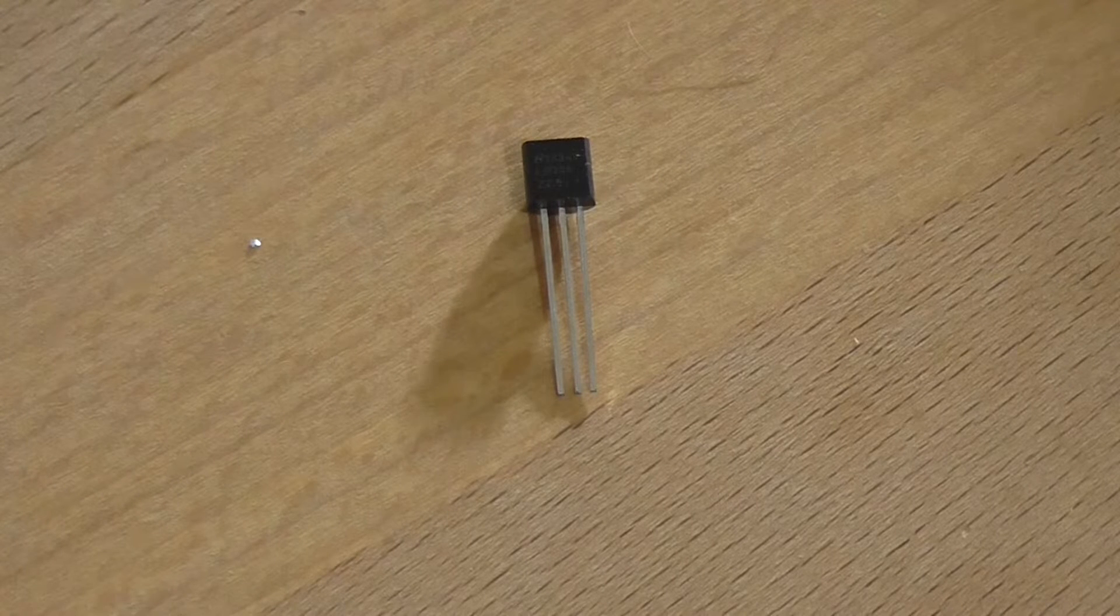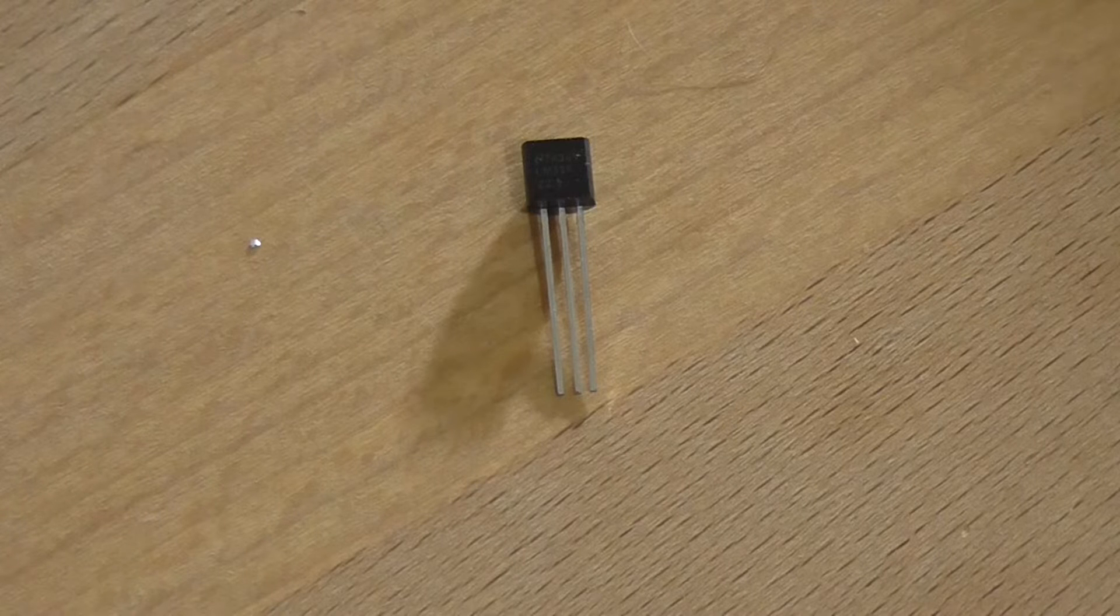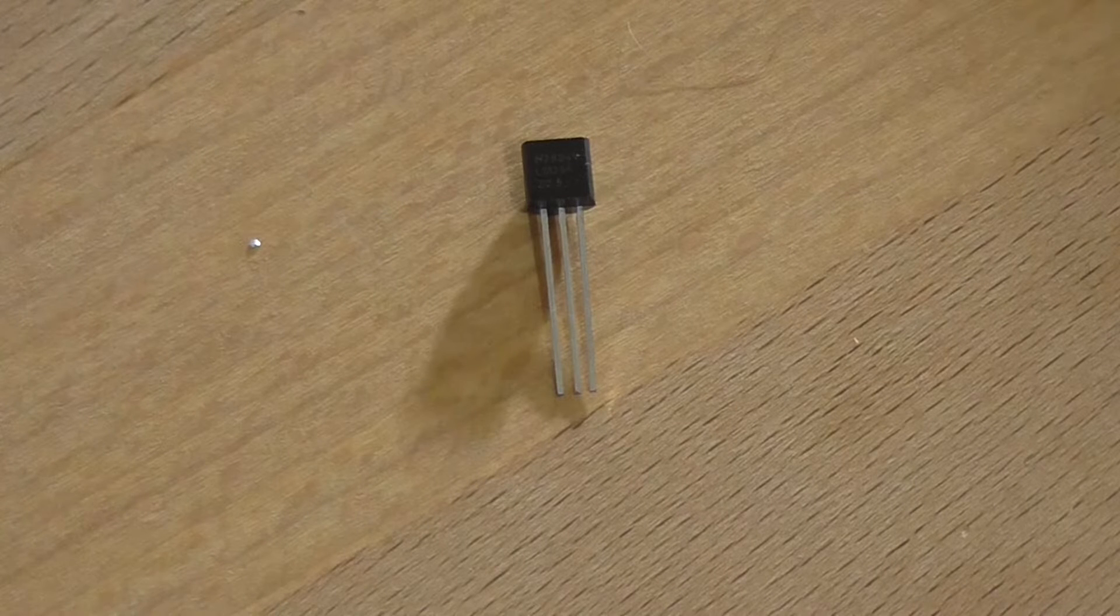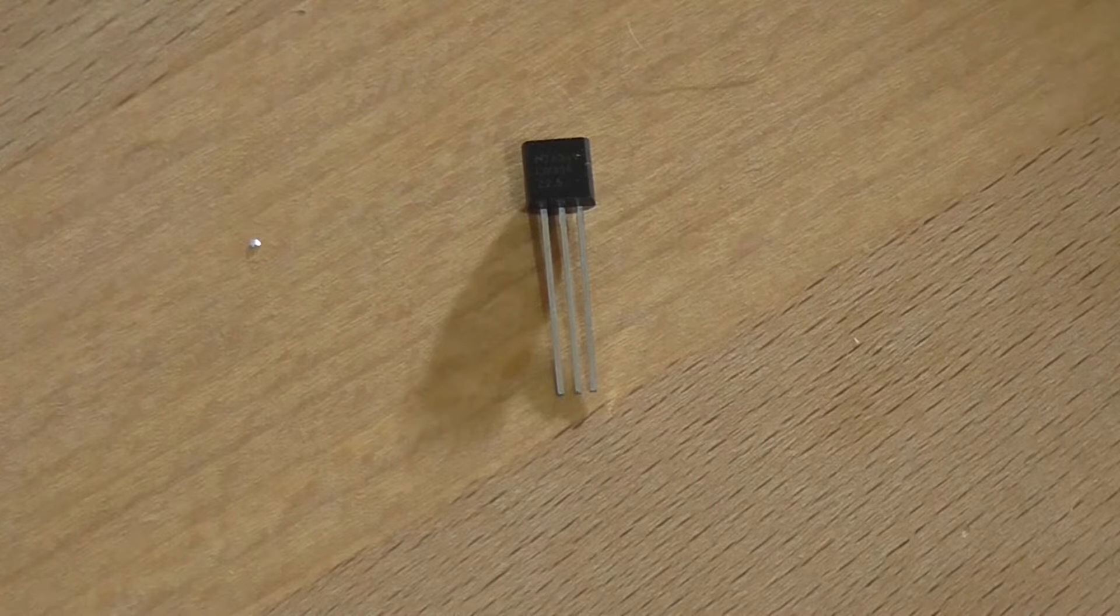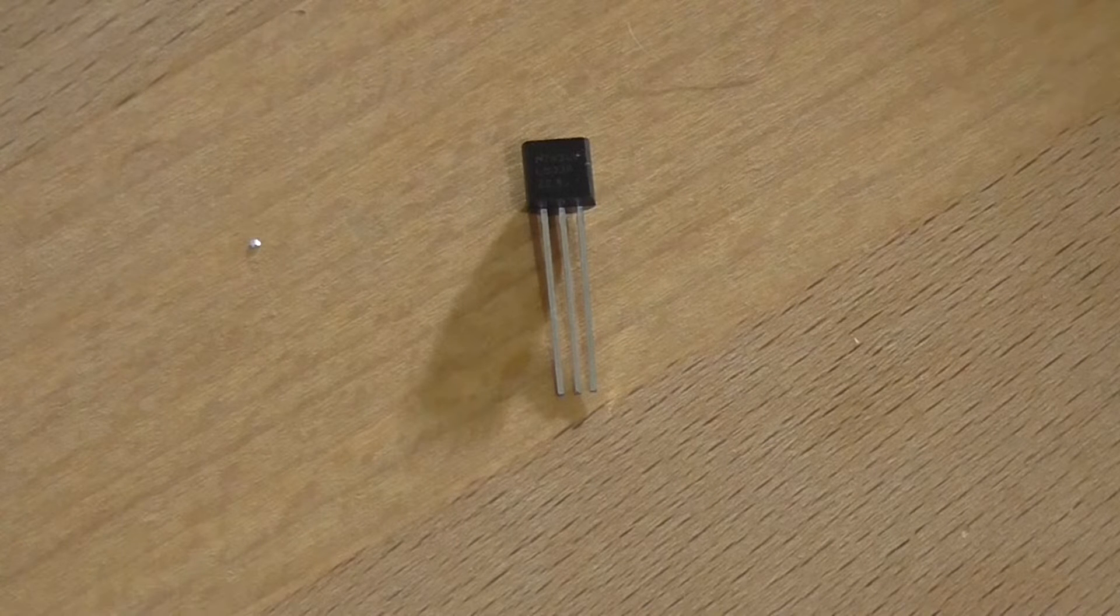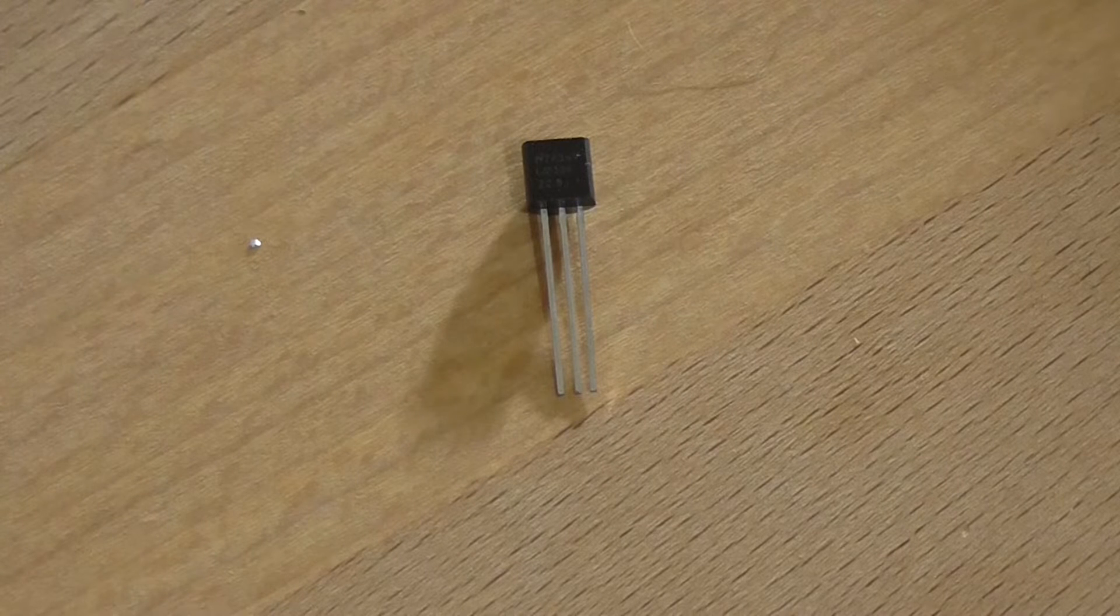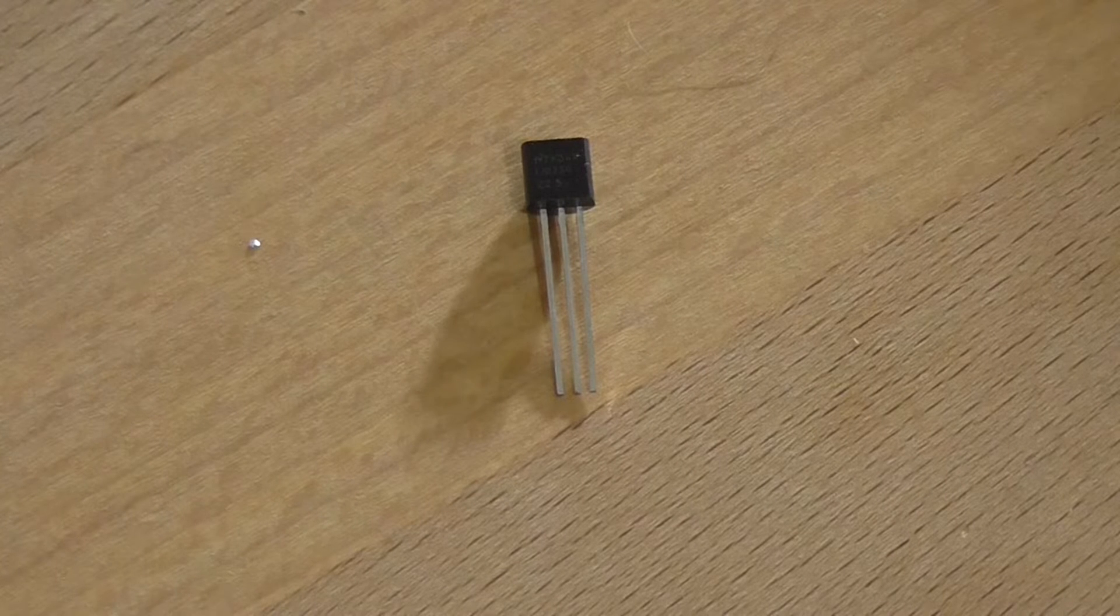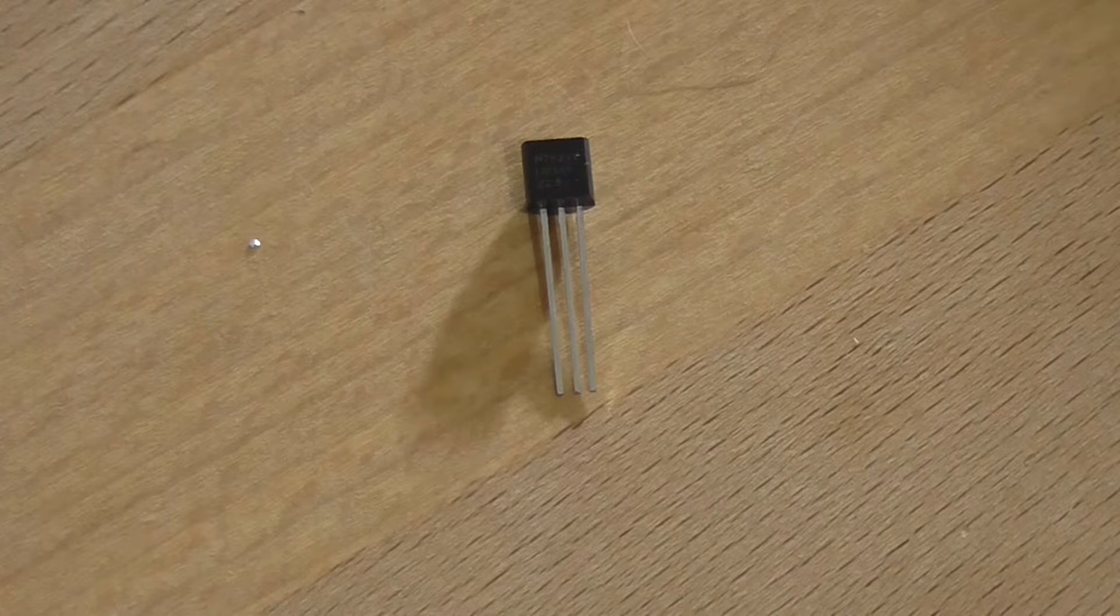Well they're used in places where you need a constant steady voltage reference which is not really affected by temperature and is used in regulated power supplies for instance, to provide a steady voltage reference for the error amplifier. It basically is used similar to a zener diode. It looks like a transistor. It has three legs like a transistor but it's not a transistor.